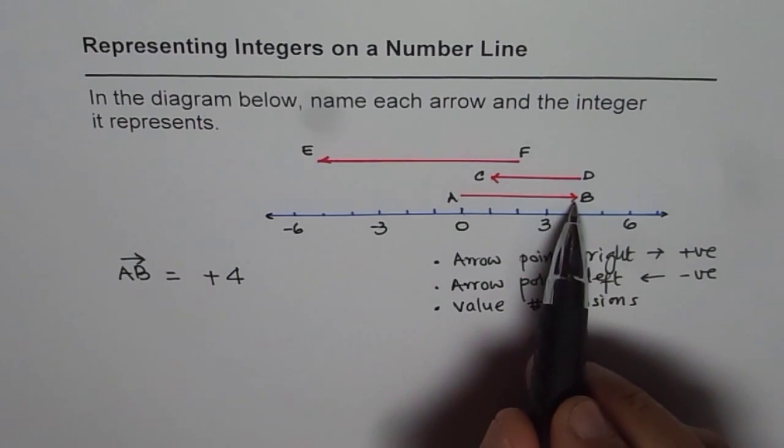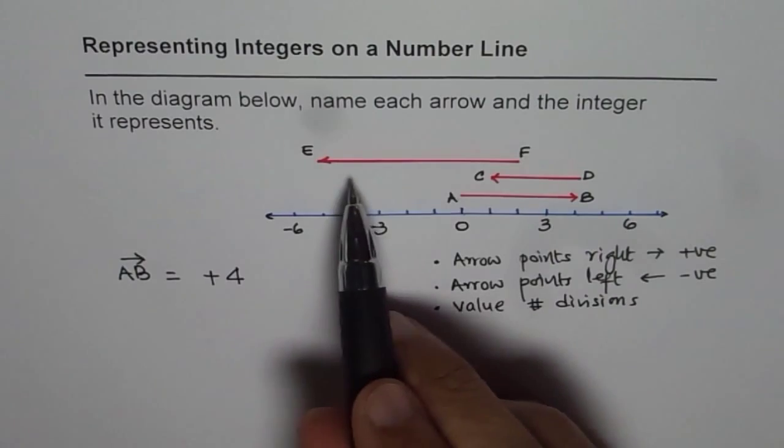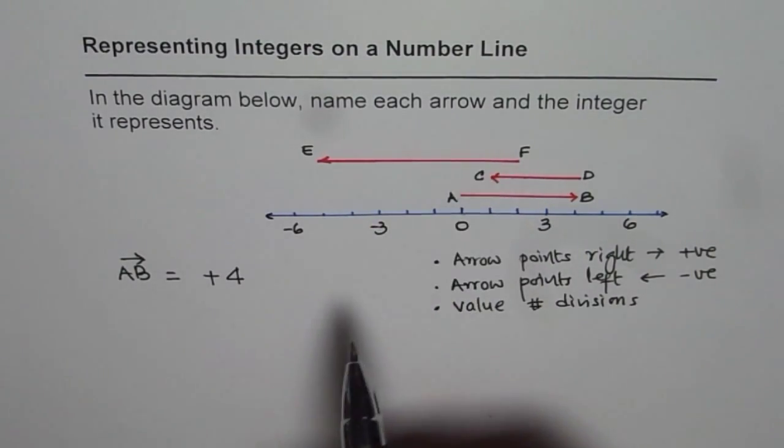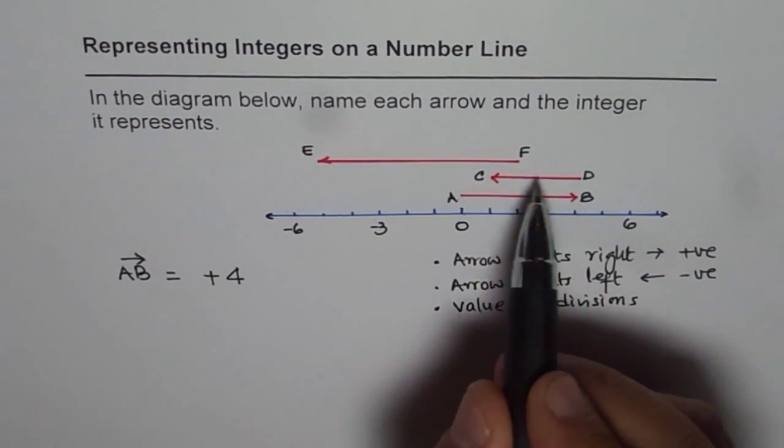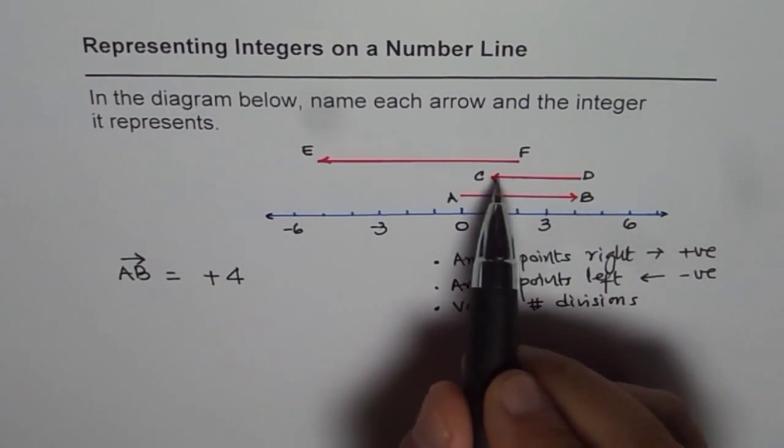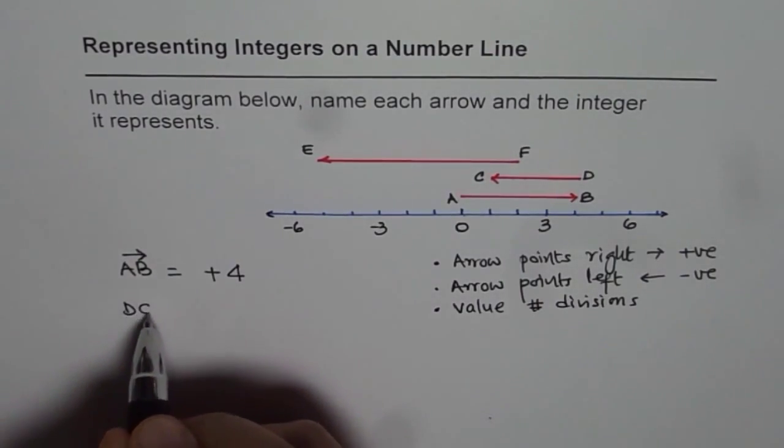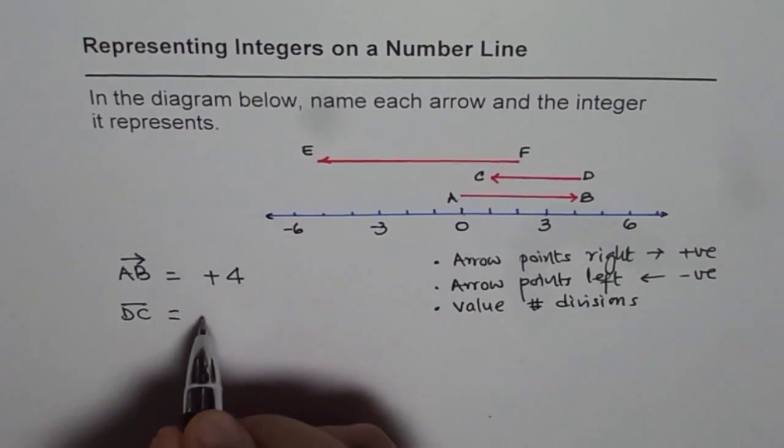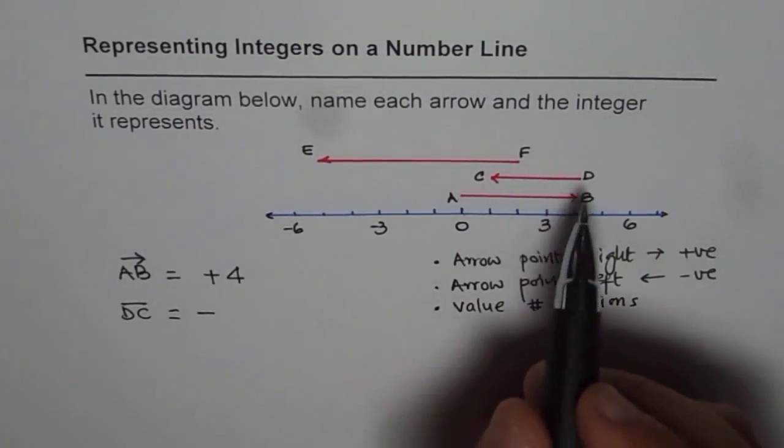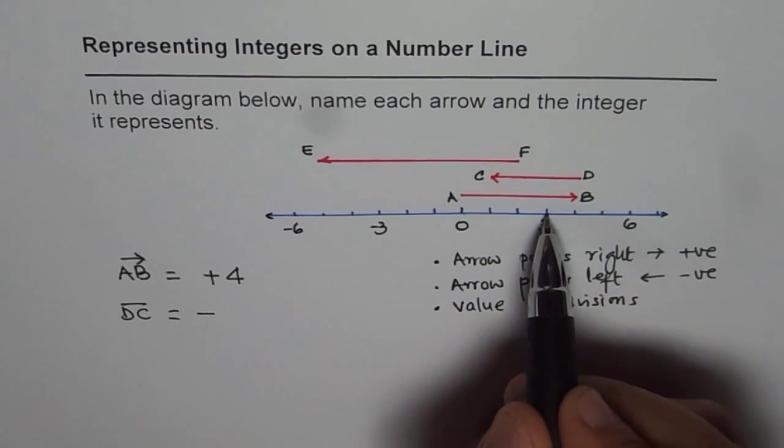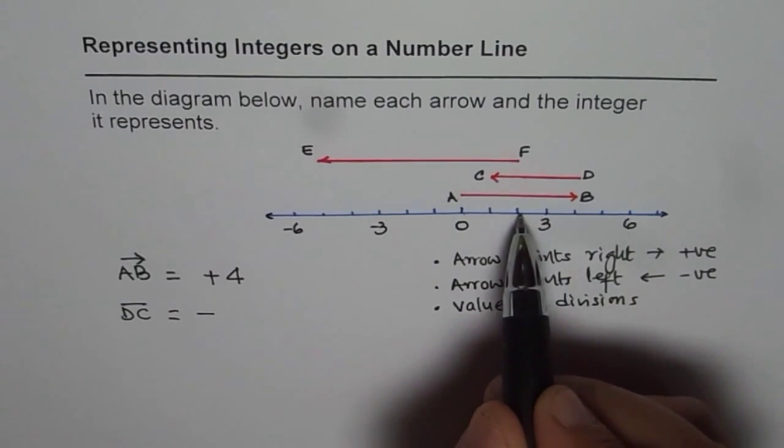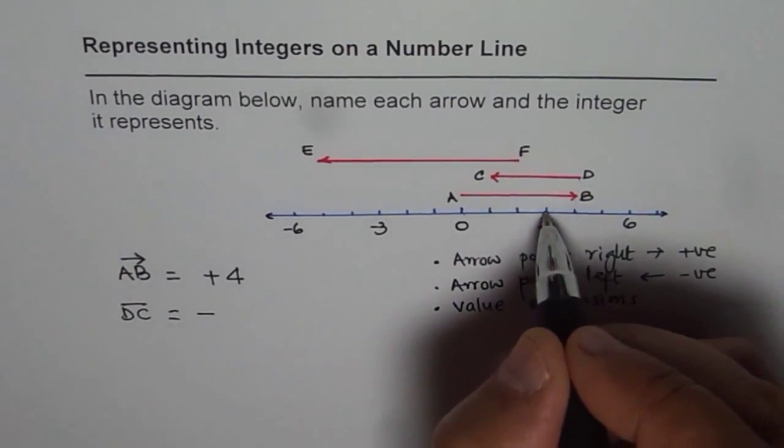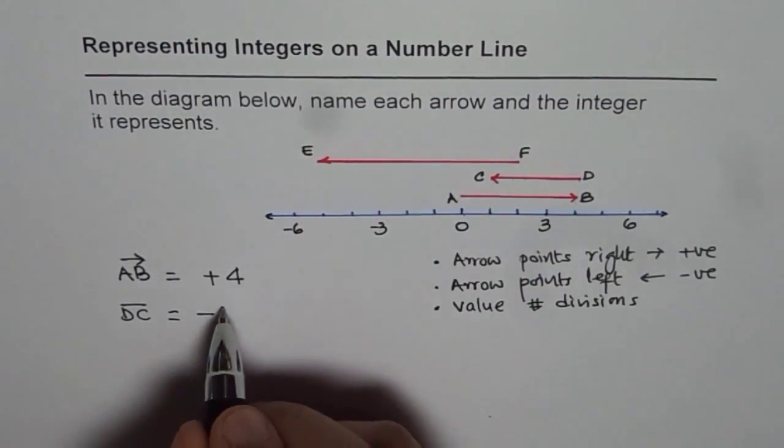Anything pointing right will be positive and left will be negative. So these two integers are negative. We should actually write them from starting to end point. So D to C is our integer, and we write D to C as the next integer. Since it is pointing left, it has a negative value. And how much? We will see how many divisions it goes. So 1, 2, 3. So it moves from one point to the other going through three divisions. So it is minus 3.